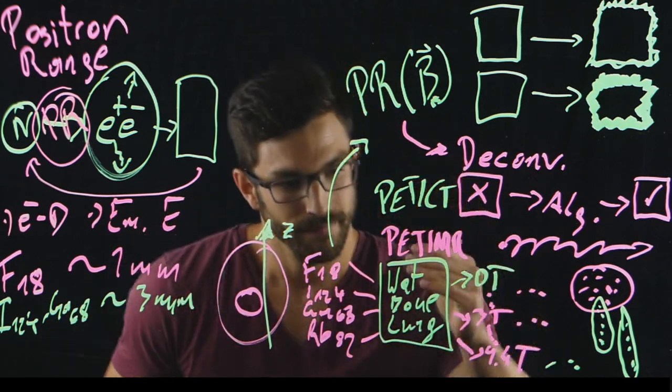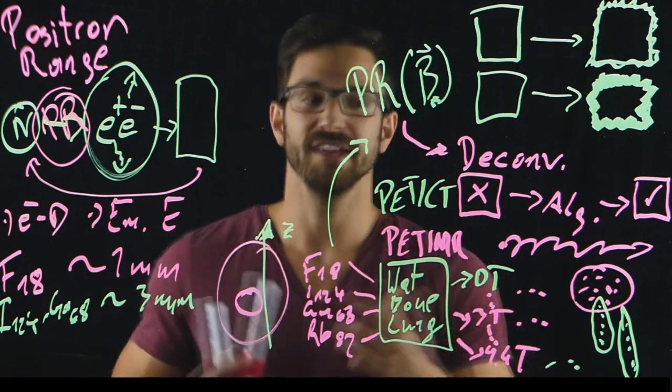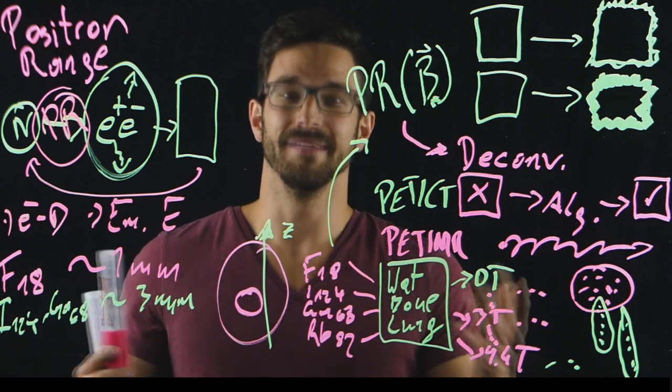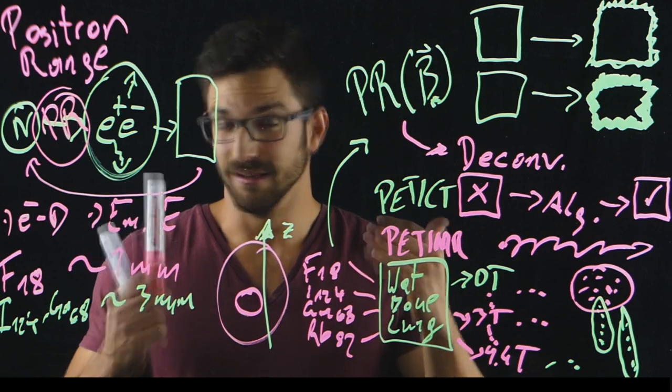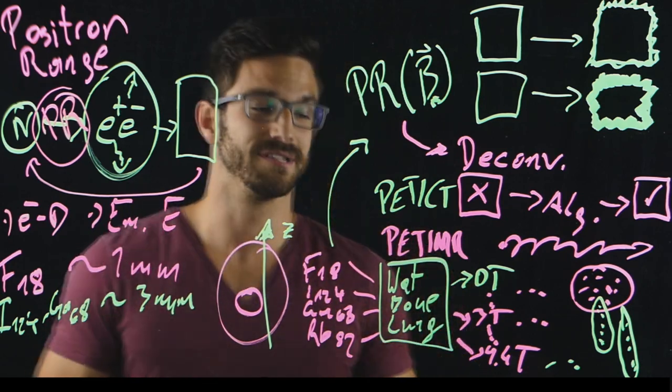Now, for tissue-dependent positron range correction of iodine, gallium and rubidium, not only for PET-CT but also for PET-MRI. That's what I did, and that's what we also want to publish. The link to the publication, if it's out already, you can find below.